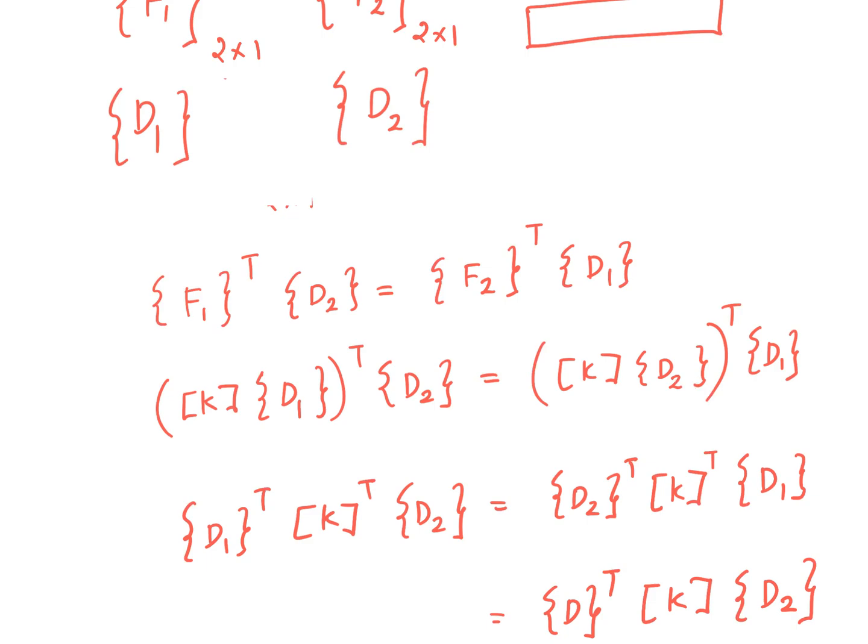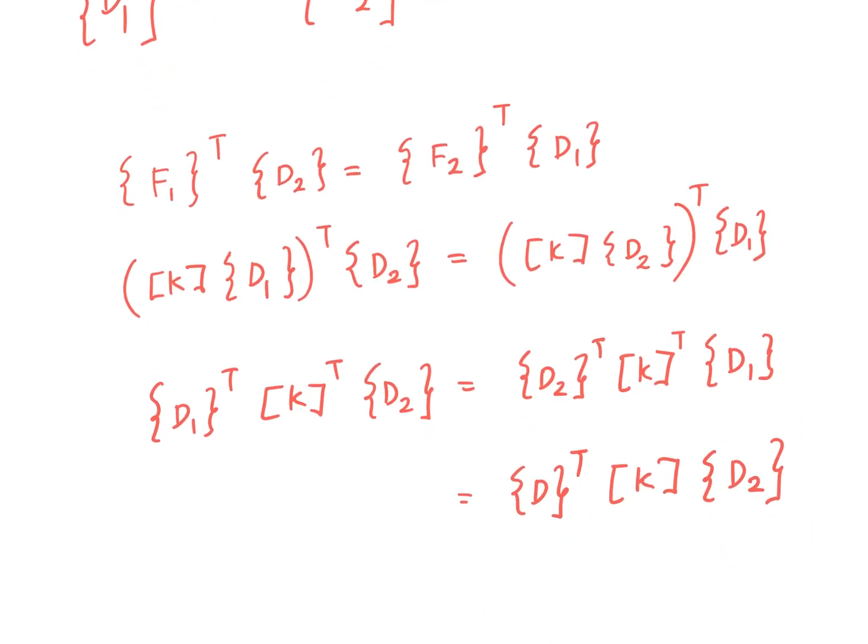So I am expanding these equations here and finally I can take the transpose of this quantity also because this is a scalar so the transpose of the scalar has to be the same. Then once I take the transpose of this quantity I arrive here and this clearly indicates that K transpose equal to K. So this is how using Maxwell-Betty theorem we can prove that the stiffness matrix for a linear elastic structure is symmetric.